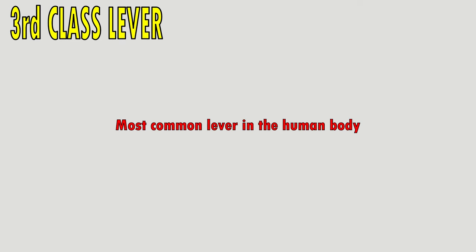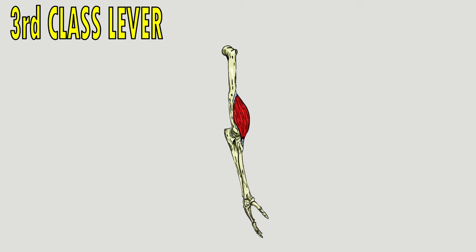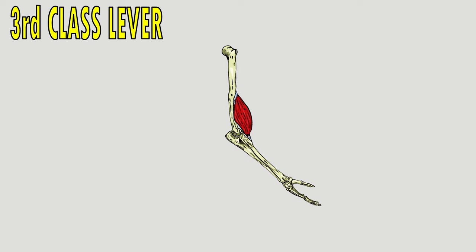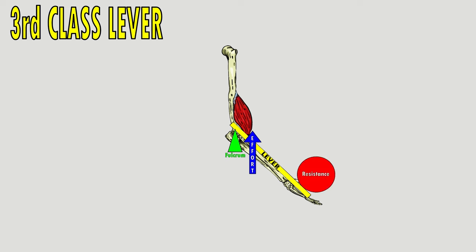The third class lever is the most common lever in the human body. An example is the brachialis muscle: since it's a third class lever, the effort force is in the middle — this is where the brachialis muscle inserts. The elbow joint is the fulcrum, and the resistance is the hand or whatever the hand is holding.